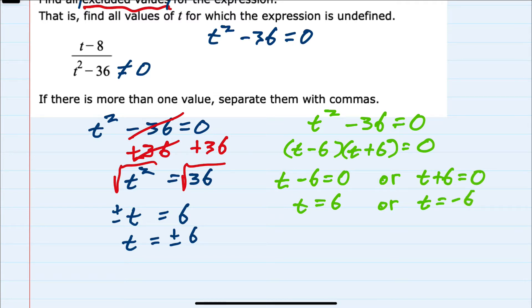So the values that I would have to exclude, the values that I couldn't substitute into the original expression, would be t equals 6, separate with a comma, minus 6. Those two values cannot be substituted in.